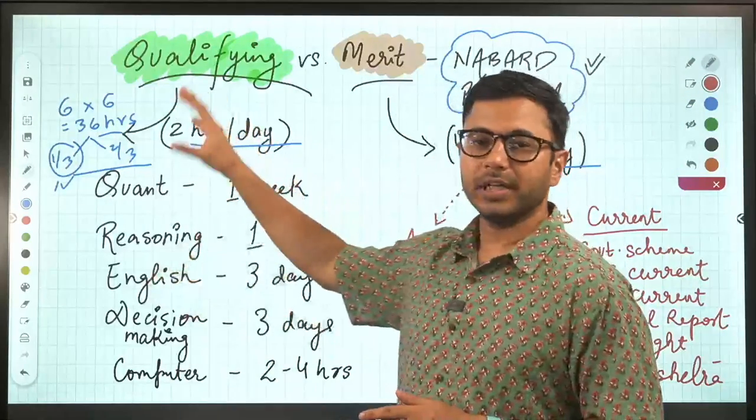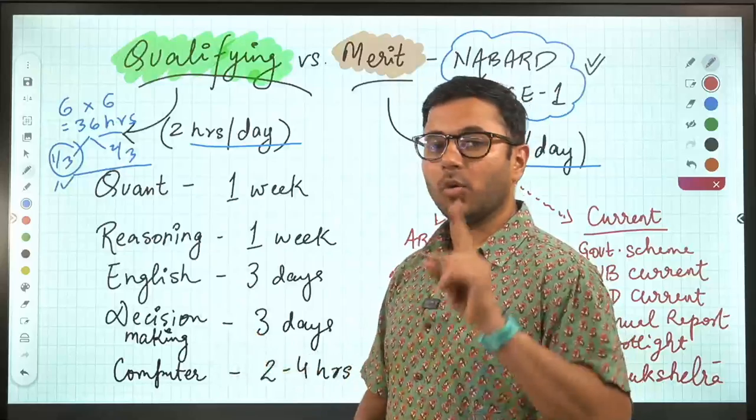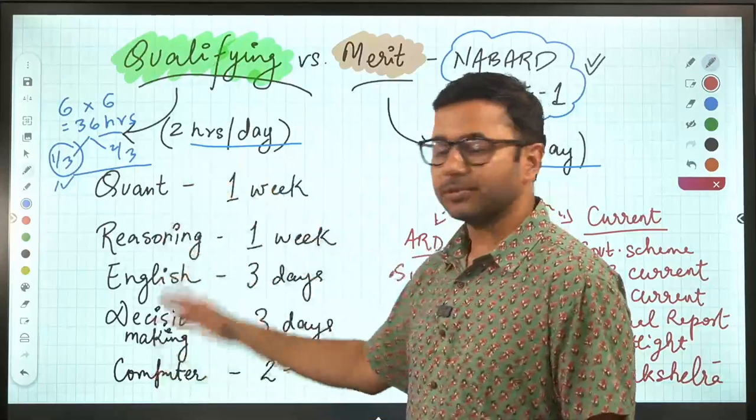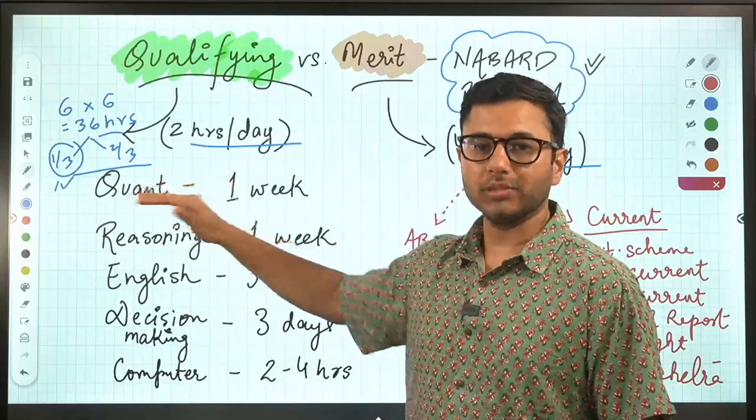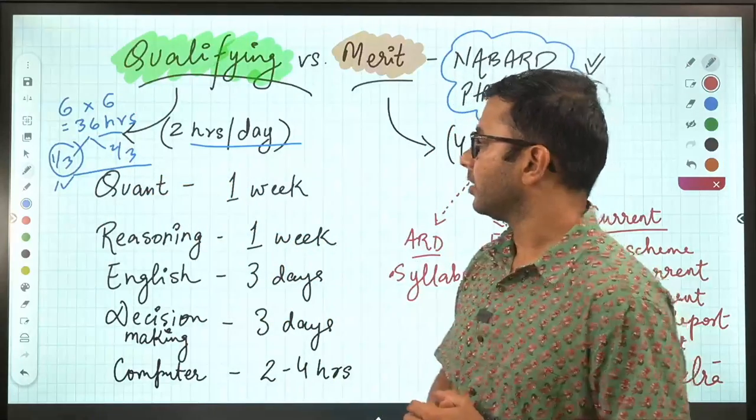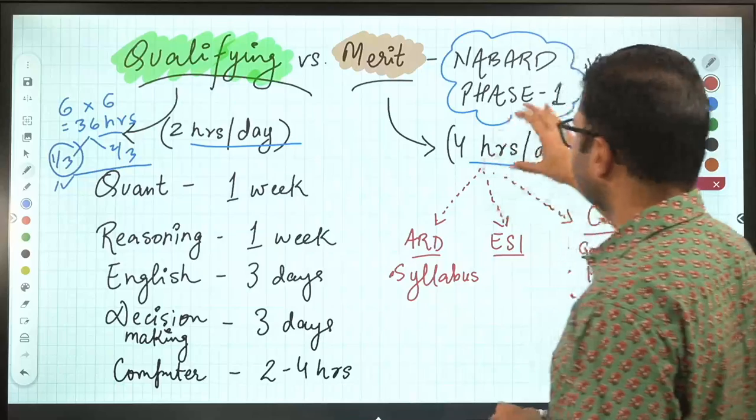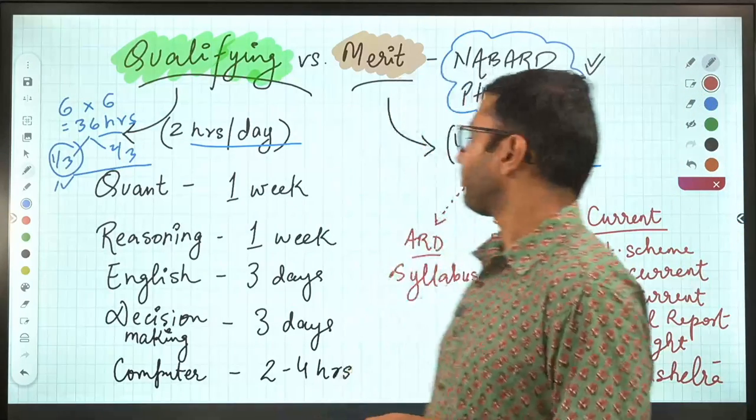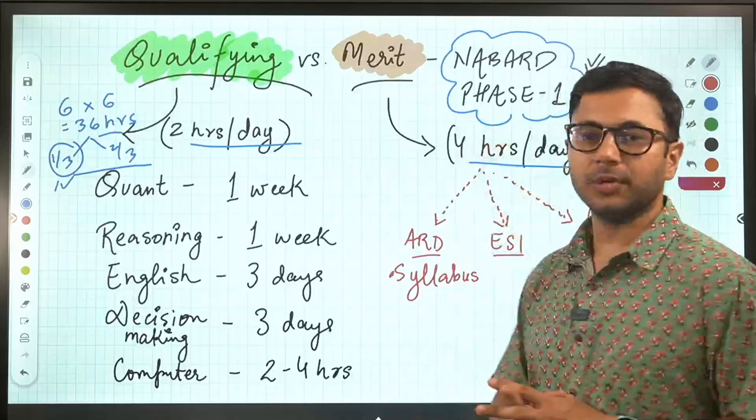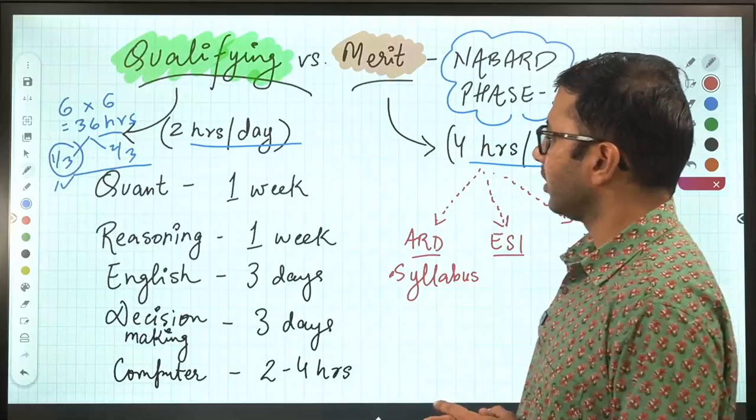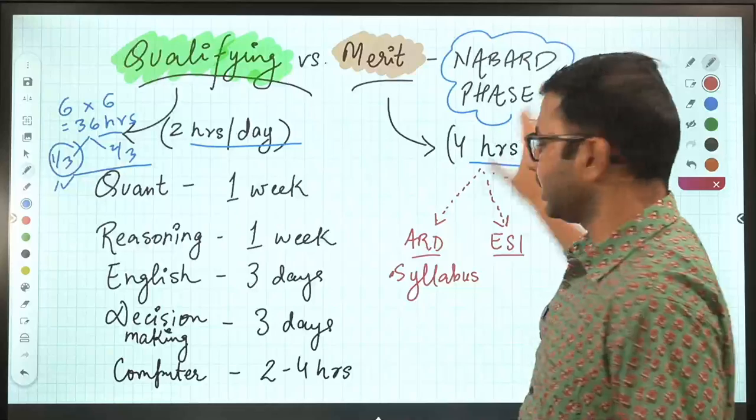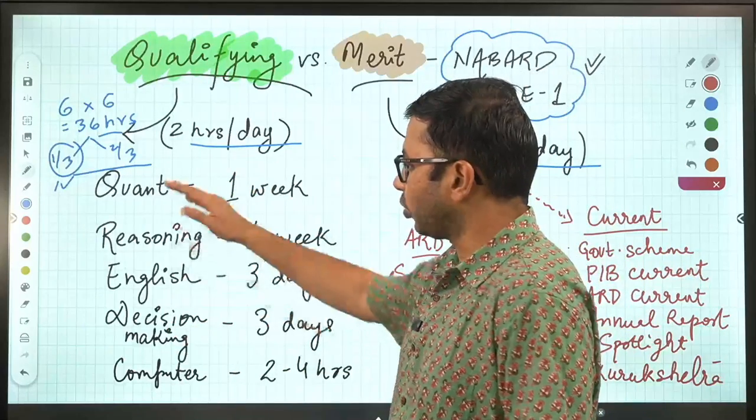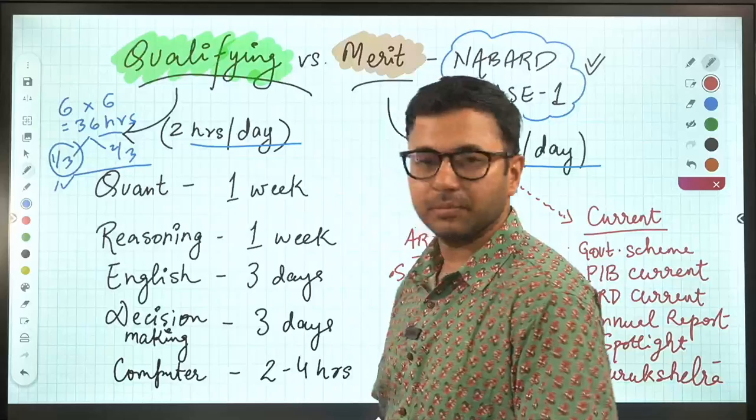So, you spend about two hours per day on qualifying subjects, one subject at a time. Please remember that, you have to pick up one subject at a time. At the same time, you pick up any one of these three subjects for merit and spend about four hours per day on these subjects. Let's start with the qualifying subjects and then I'll come to the merit subjects. In qualifying, there are these five subjects: Quant, Reasoning, English, Decision Making, Computer Awareness.